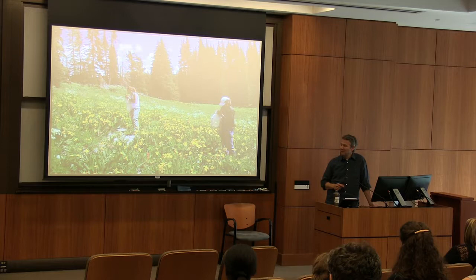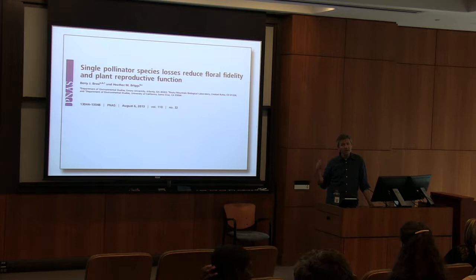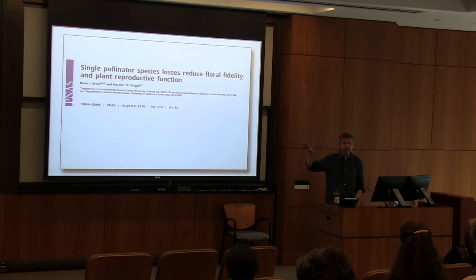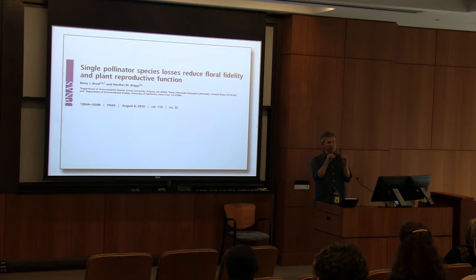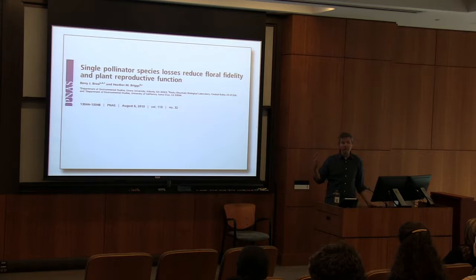We've been able to look at plant reproductive and pollination outcomes when we simulate extinctions this way, with Emory undergrads faithfully executing these species removal manipulations. One result came from a paper published in PNAS a few years ago. We found that when we did these species removal manipulations, the remaining bees in the system actually changed their behavior — specifically, a behavioral element we call floral fidelity. For plants, it's really important that a pollinator sequentially visits different individuals of the same plant species, transferring the right kind of pollen. Lily pollen doesn't work to pollinate a rose. We saw a real breakdown of that floral fidelity when we simulated an extinction.